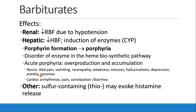One point to be aware of with barbiturates is they can cause porphyrin formation, which leads to porphyria. Porphyria is a pretty rare syndrome but shows up a lot on board exams. It is a disorder of one of the enzymes in the pathway that synthesizes heme. Acute porphyria is an overproduction and accumulation. Patients may experience abdominal pain, vomiting, neuropathy, weakness, seizures, hallucinations, depression, anxiety, or paranoia, and they can develop cardiac arrhythmias, pain, and GI symptoms like constipation and diarrhea. You should not give barbiturates to patients who have porphyria.